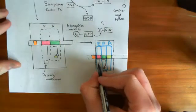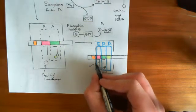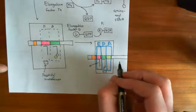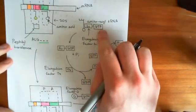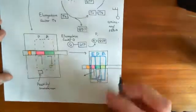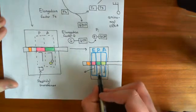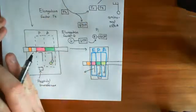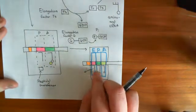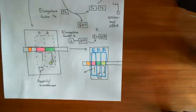This tRNA in the E site of the ribosome will leave — it's going to exit. The process will happen again: another aminoacyl tRNA with elongation factor TU and GTP bound to it will come into the A site, complementary to that third codon. The peptidyl transferase enzyme will then move this dipeptide onto that third amino acid, giving a tripeptide. Then the ribosome will shift along one again: this tRNA goes into the E site, the tRNA with the tripeptide goes into the P site, and so the process continues.